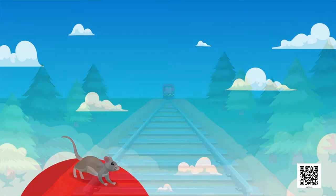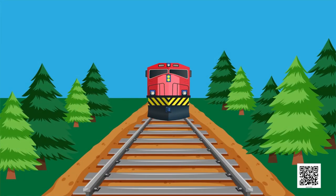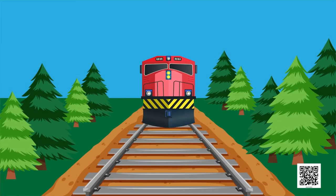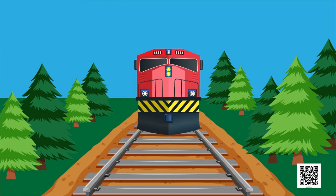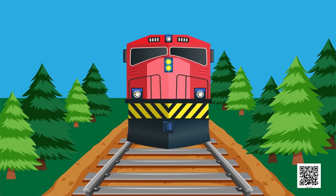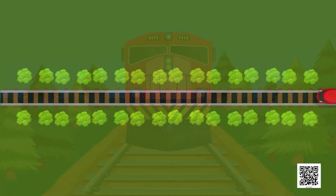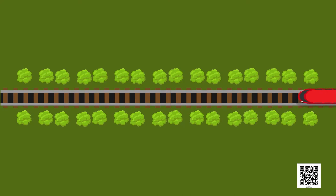Suddenly he heard a loud honking. He saw a train moving on a railway line making the sound of 'chuk chuk chuk chuk.' He thinks that from here the train looks like a long box.